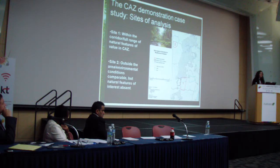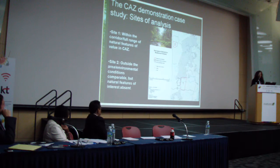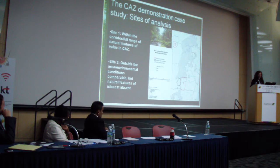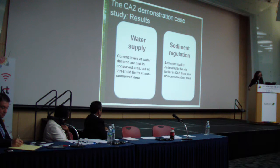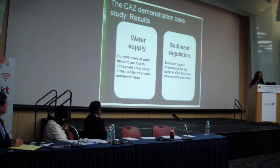The conventional approach looks at how nature provides without accounting for people's needs and their demand for services. We have two sites: Site 1 is more forested, and Site 2 is more agricultural. Our results — and I'm going to focus only on water here because it's most closely related to agriculture — bring out the point of dependence and impact.